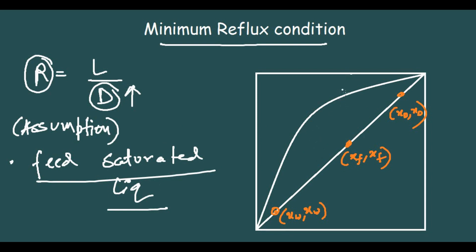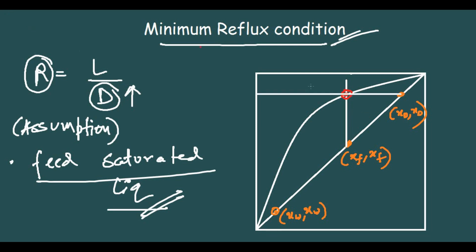This assumption — that the feed is a saturated liquid — is not a hard and fast rule; it just makes the graph less complex. Under this assumption, the feed line (Q line) is a straight vertical line passing through XF, XF. Because the tower operates at minimum reflux, the top operating line passes through the point XT, XT and also through the intersection of the Q line with the equilibrium curve.